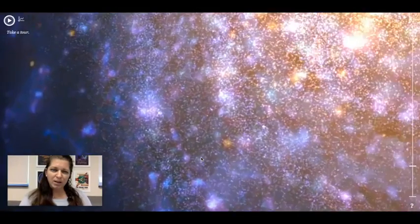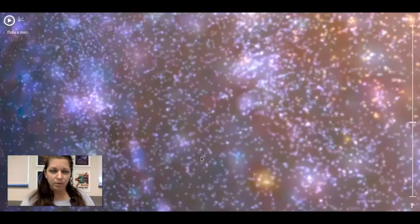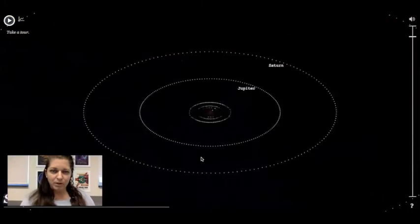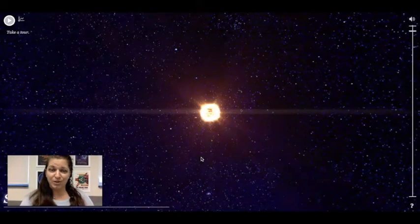So I'm gonna just kind of move this around and then what we're gonna do is we're gonna start to zoom in and what you can see is that we kind of live about two-thirds of the way out from the center of our own galaxy. So I'm gonna keep zooming all the way in and just go ahead and introduce our star, the Sun.